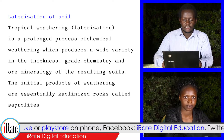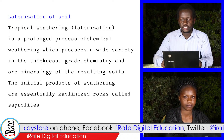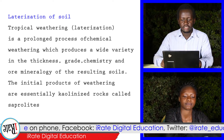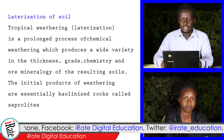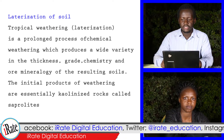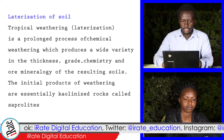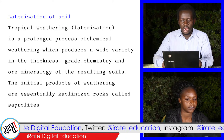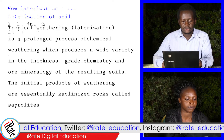Tropical weathering is a prolonged process of chemical weathering which produces a wide variety in the thickness, grade, chemistry, or mineralogy of the resulting soils. The initial products of weathering are essentially colonized rocks called saprolites.